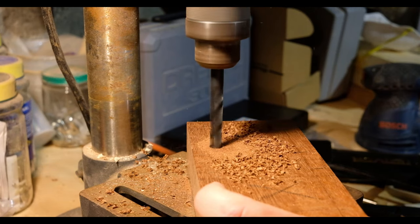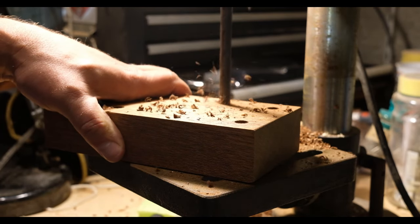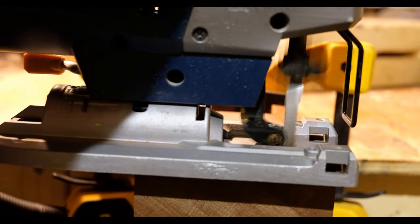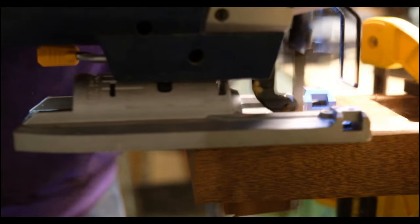I cut them out with a 3 eighths inch bit at the corners on the drill press and then finished with the jigsaw. These cavities are hidden so the cuts don't have to be pretty.